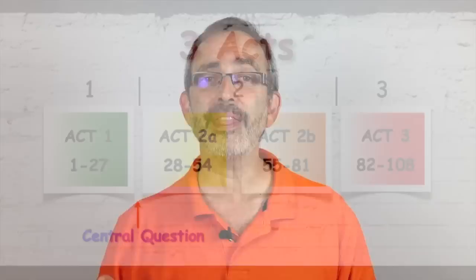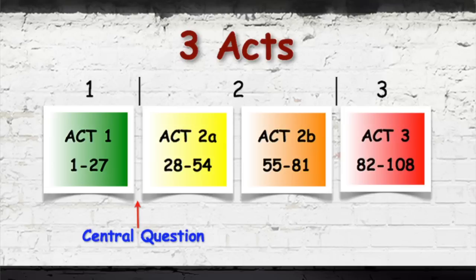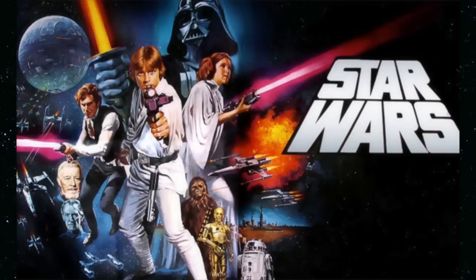Now, if you notice at the break between act one and act two, there's something called the central question. The central question is the question that, once it's answered definitively yes or no, the movie's over. More accurately, it should really be called the central questions, because a good central question has three components: a physical component, an emotional component, and a spiritual component. Let's look at the central question for Star Wars. Will Luke destroy the Death Star, save the princess, and become a Jedi like his father? That's the physical, the emotional, and the spiritual components.